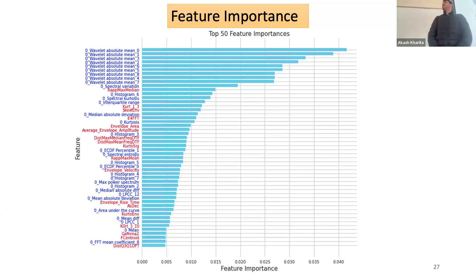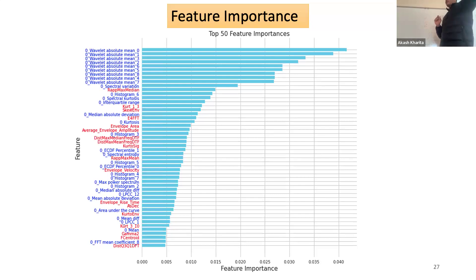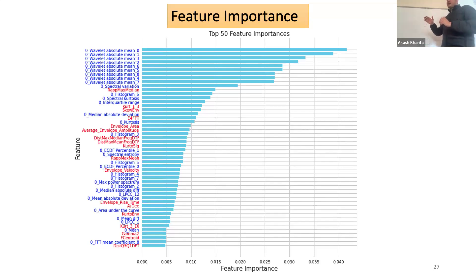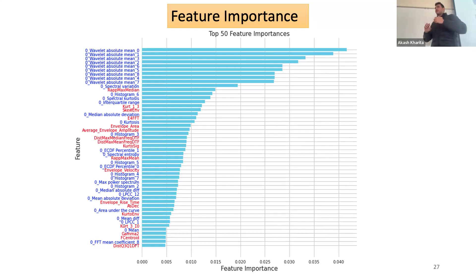The wavelet absolute means basically represent: we have a wavelet, we convolve it with the seismic signal, and then take its mean in different frequency bands. There are 10 different frequency bands representing frequencies from 0.5 to 2.5 Hz — wavelet mean 1 represents around 1 Hz, wavelet mean 10 represents around 2.5 Hz. These are the features I think are most important in discriminating surface events from other events.